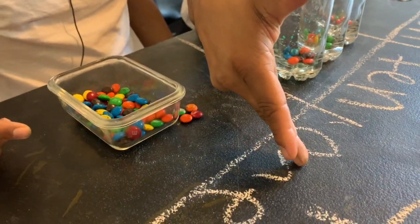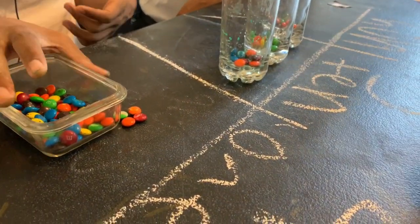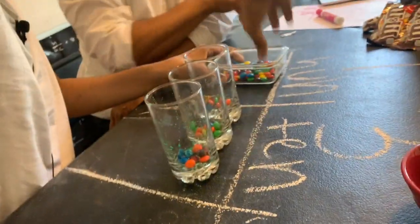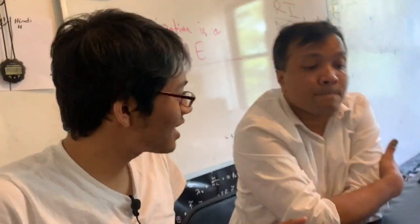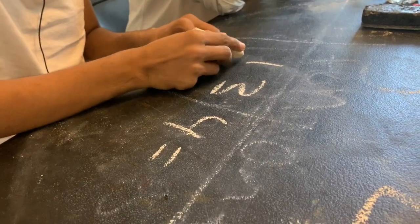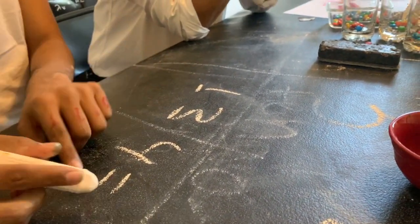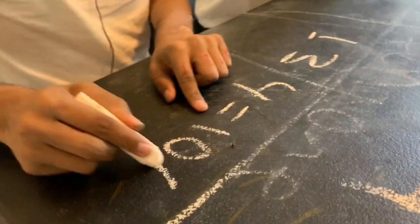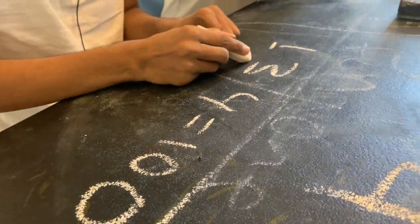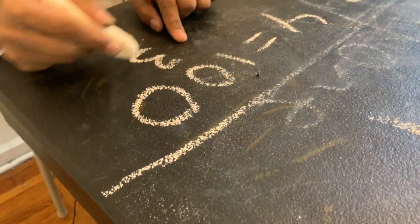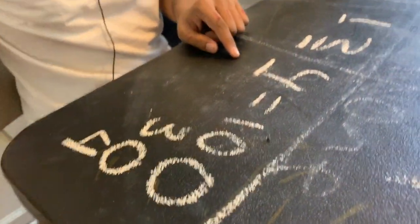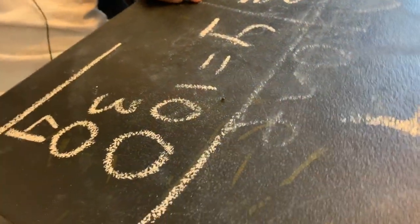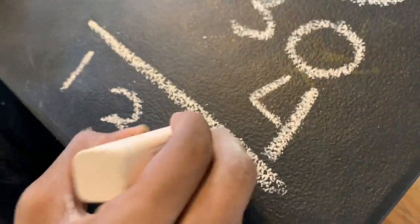This is 4 groups of 1. This is 3 groups of 10. This is 1 group of 100. If I count all of these up, I get 134 candies. Now can you write it in expanded form? Yes. I know this is 1 group of 100, so I'll write 100. This is 3 groups of 10, so I'll write 30. This is 4 groups of 1, so I'll write 4. And if I add all of these up, I get 134.